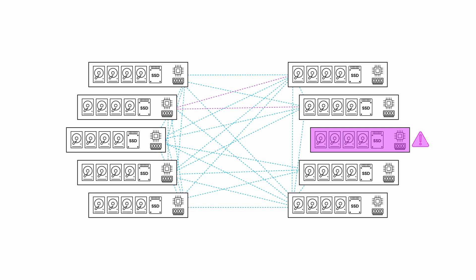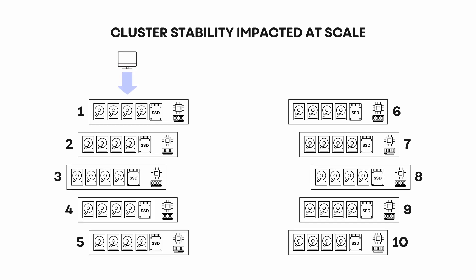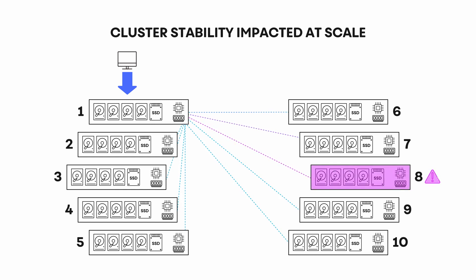If there's an issue with any of the nodes, it doesn't matter if it's the node you're talking to or the node some other user is talking to — you're all impacted. That's the fundamental design of shared nothing. A node owns some amount of disk, but it can't own the entire transaction. A user talking to node one has to go ask node two for data, node three for data. If one of those is slow to respond, or doesn't respond at all, the user is directly impacted.